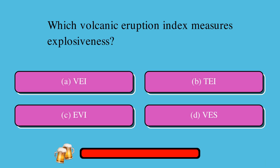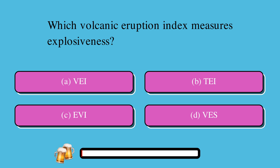Which volcanic eruption index measures explosiveness? A. VEI, or B. VI, or C. EVS? The correct answer is VEI.